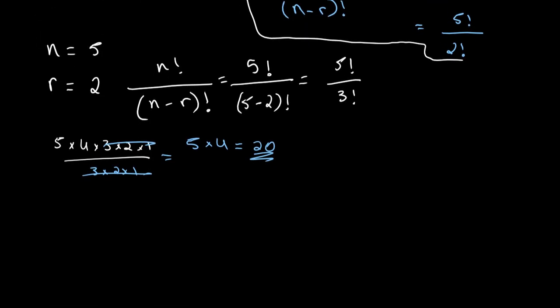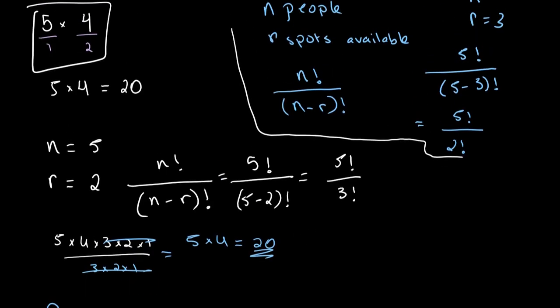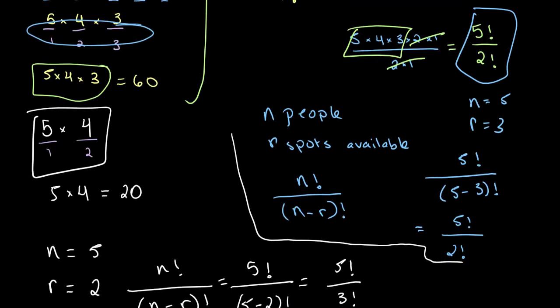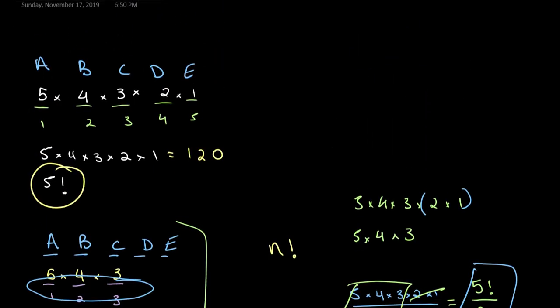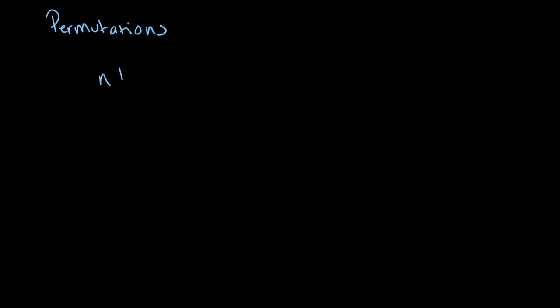So this is what we refer to as a permutation. Where there are only 2 spots, there are 20 possible permutations. In the case of 3 spots, there were 60 possible permutations. And in our first example where there were all 5 spots, there were 120 possible permutations, or arrangements, of the people. Permutations can be calculated using the equation n factorial divided by (n minus r) factorial, where n is the number of objects and r is the number of spots available for those objects.